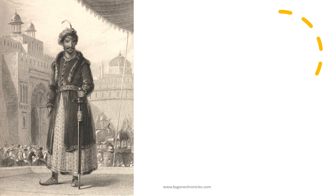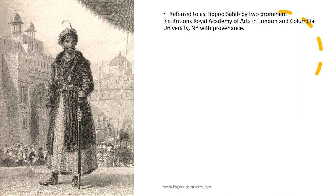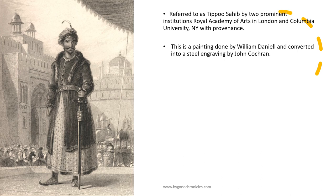The third image that we looked at was this painting. This was a bit challenging as the image was titled as Tipu Sultan by two very prominent institutions — Columbia University in New York and the Royal Academy of Arts in London. The Royal Academy of Arts gave a very detailed description on the prominence of this image, mentioning it to be a portrait of Tipu Sahib with the name of the engraver John Cotron and painter William Daniel. However, this was dismissed as not being Tipu Sultan because of the following reasons.